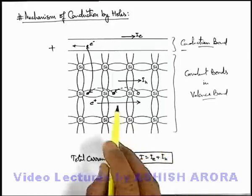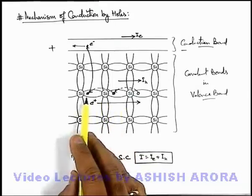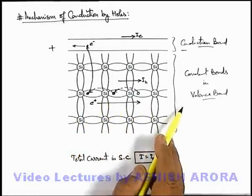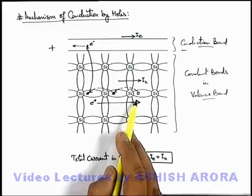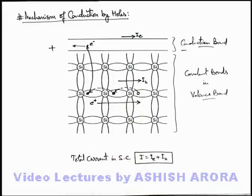This is the way how we can explain the mechanism of conduction of holes in valence band of semiconductor, which also contributes to the total current of semiconductor.